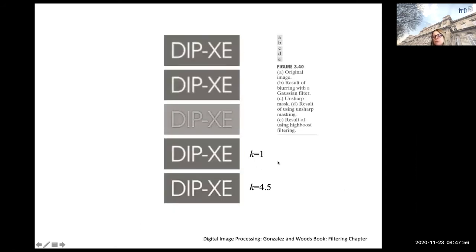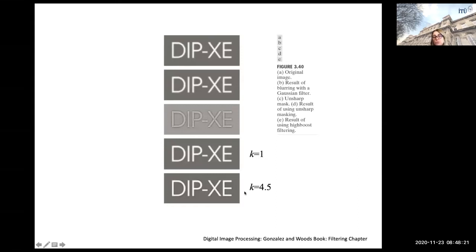More examples showing the effect of the K parameter. The original image is at the top. B is a blurred version with a Gaussian filter. C is the unsharp mask — the difference of the two. The result with K equals 1 and with K equals 4.5 shows much more boosting — high boost. Of course, at some point it may start to give artifacts.